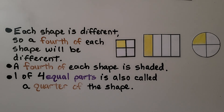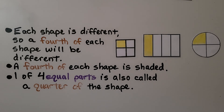A fourth of each shape is shaded. One of four equal parts is also called a quarter of the shape. One fourth is the same thing as one quarter.